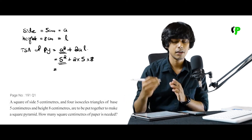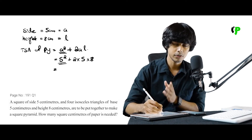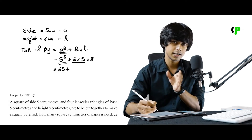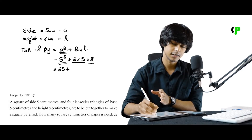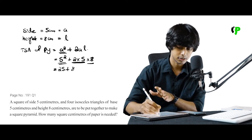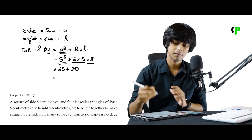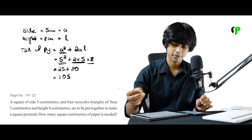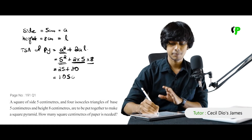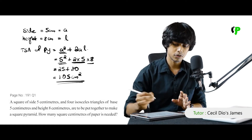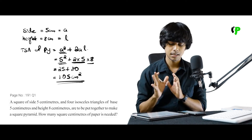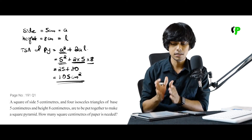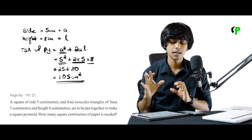Let's solve it. 5 squared is 5 into 5, which equals 25. Then 2 into 5 is 10, and 10 into 8 is 80. So total surface area equals 25 plus 80, which is 105. The answer is 105 square centimeters of paper needed.